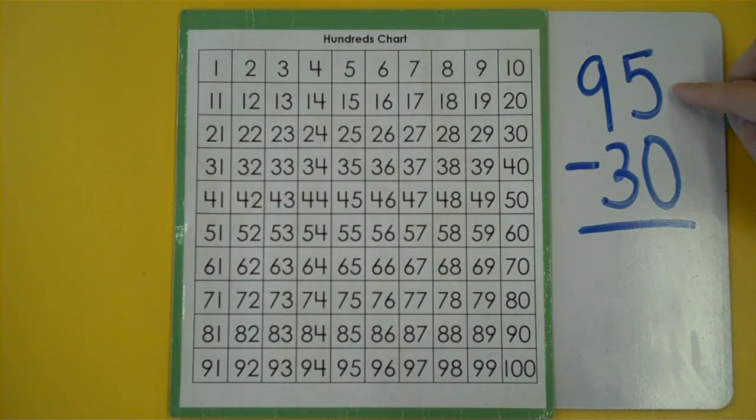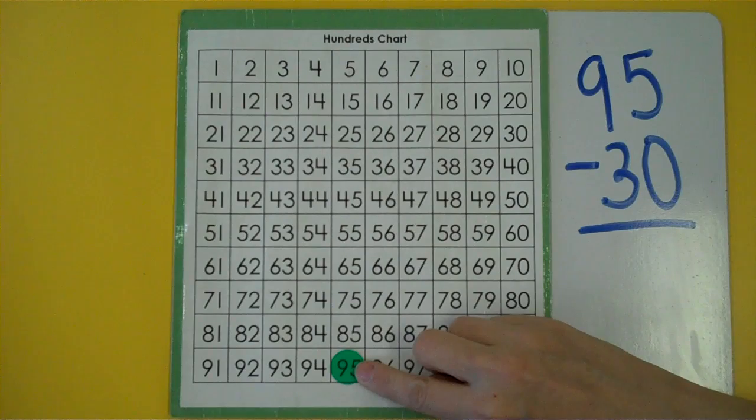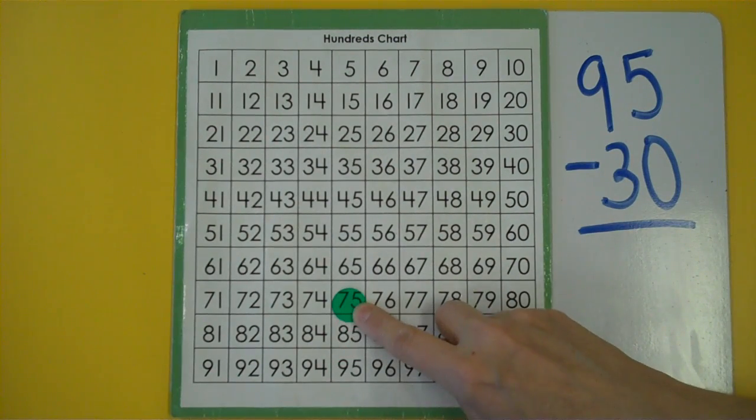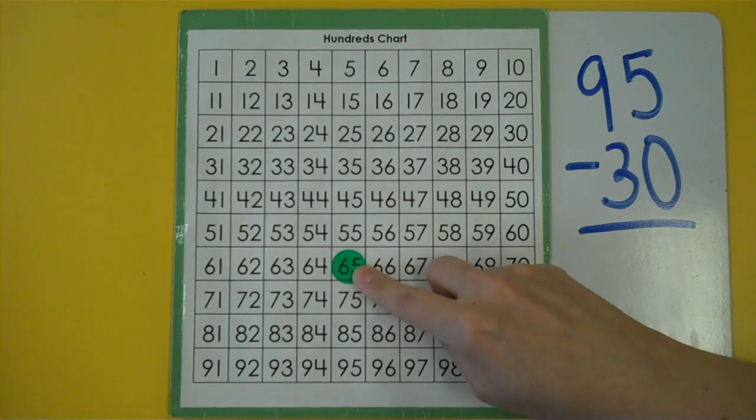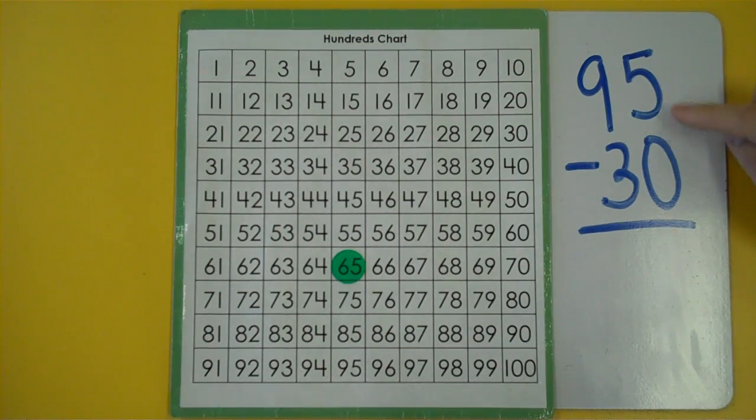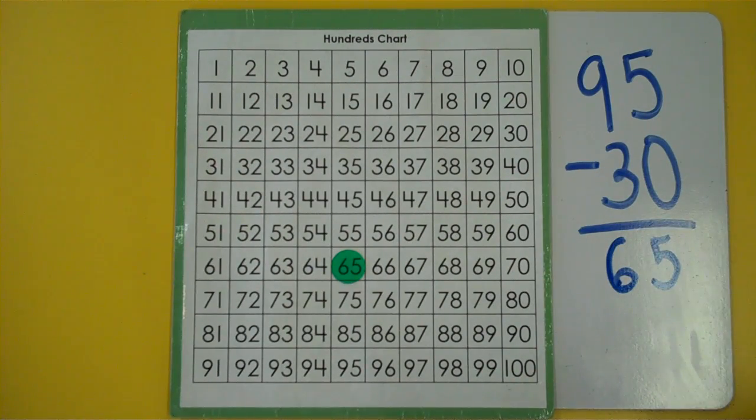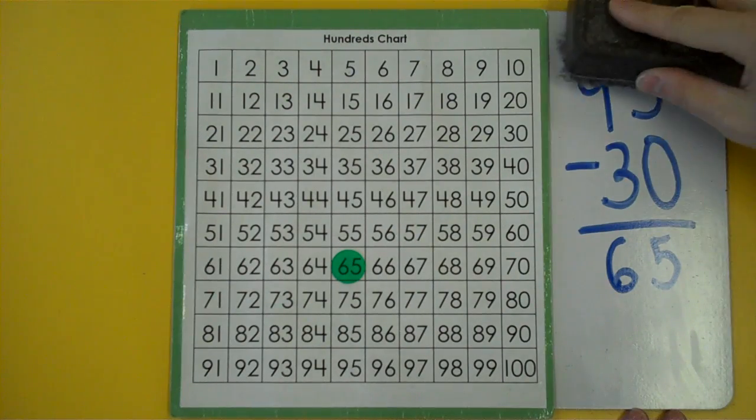So I'm going to start at 95 and I'm going to go 10, 20, 30. 95 take away 30 is 65. The difference is 65. Let's try one more that has a skip counting with tens.